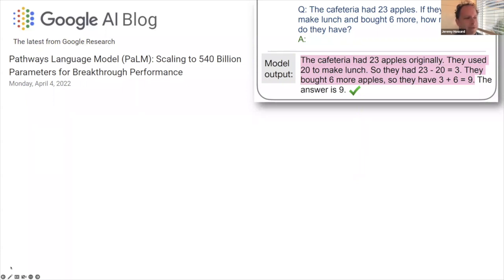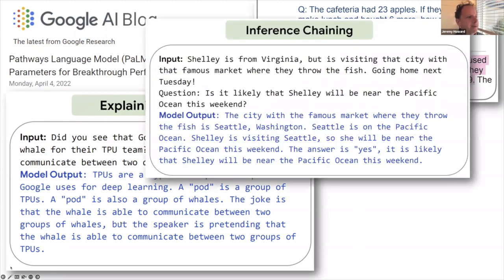This particular model can explain all kinds of things — it can explain jokes. It can also reason about complex ideas: 'Shelley is from Virginia and is visiting that city with that famous market where they throw the fish, going home next Tuesday. Is it likely that Shelley will be near the Pacific Ocean this weekend?' Just English is typed in as a prompt and the model returns that the city with the famous fish market is Seattle, Washington, and goes on to explain why the answer is yes.